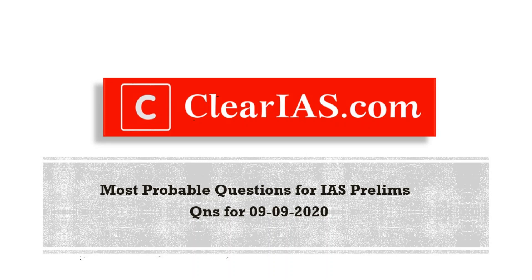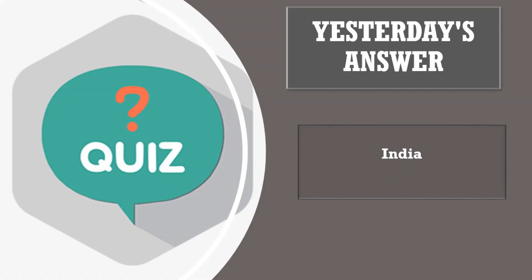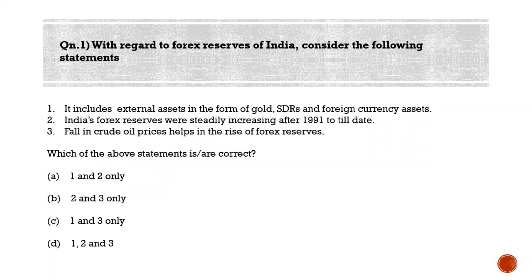Hi guys, welcome to today's session. Thank you all for your responses on yesterday's quiz. Yesterday's quiz question was: which country proposed the Comprehensive Convention on International Terrorism in the United Nations General Assembly? The right answer is India. Only India proposed the Comprehensive Convention on International Terrorism. Let's now start today's session.